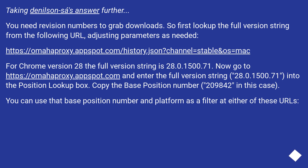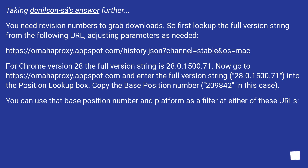Taking the approach further: you need revision numbers to grab downloads. First, look up the full version string from the provided URL, adjusting parameters as needed. For Chrome version 28, the full version string is 28.0.1500.71. Then go to the position lookup URL and enter the full version string 28.0.1500.71 into the position lookup box. Copy the base position number — 209,842 in this case.